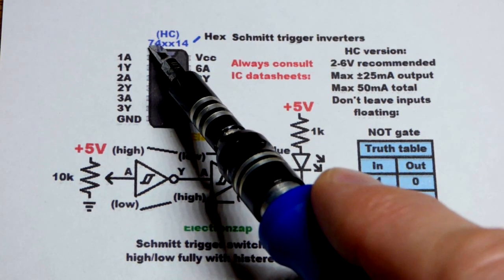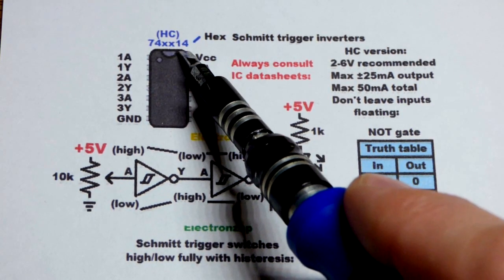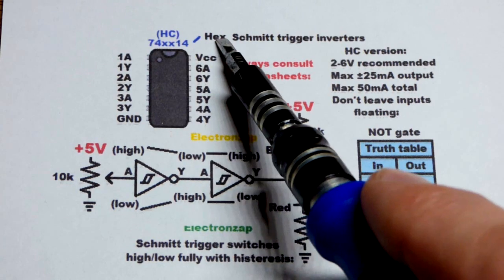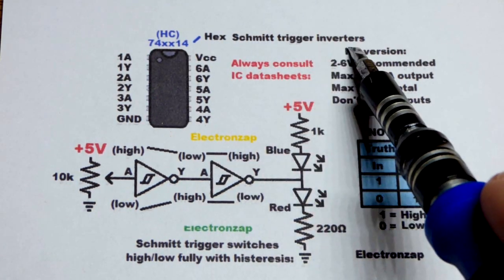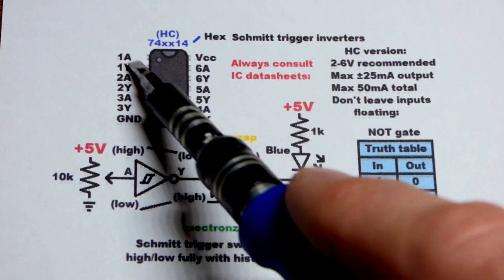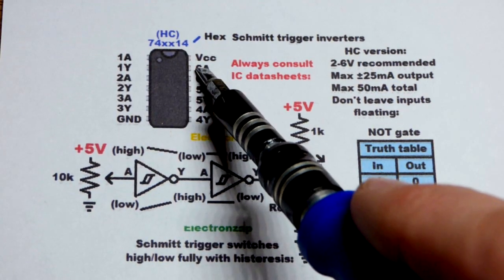7400 is the 7400 series. In the 7400 series, the 14 means that it's a hex Schmidt trigger inverter integrated circuit. So hex means there's 6 of them right there.